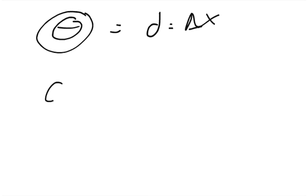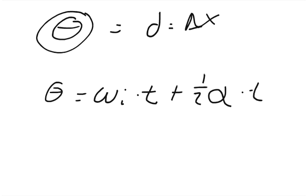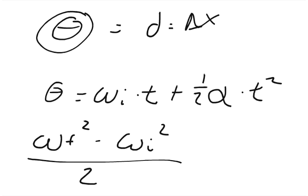You could set it up as theta equals omega initial times time plus one half of angular acceleration times time squared. But I think that this is too much going on here. You can do it like this: you can say that the final angular velocity squared minus the initial angular velocity squared divided by two times the angular acceleration equals the angular displacement.